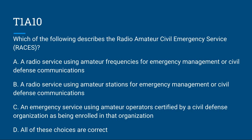T1A10: Which of the following describes the Radio Amateur Civil Emergency Service, also known as RACES? A, a radio service using amateur frequencies for emergency management or civil defense communications; B, a radio service using amateur stations for emergency management or civil defense communications; C, an emergency service using amateur operators certified by a civil defense organization as being enrolled in that organization; or D, all of these choices are correct. The correct answer is D, all of these choices are correct.